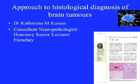Hello, my name is Katharina Kurian and I'm a consultant neuropathologist and Honorary Senior Lecturer at French Shea Hospital, Bristol. This podcast will give a basic approach to the histological diagnosis of brain tumours. I'm going to first go over some of the theory behind the classification and then show some images at the end. I've written a short article on recent advances in glial tumours, which is freely available on the web, highlighting the basic histology and research in this area.